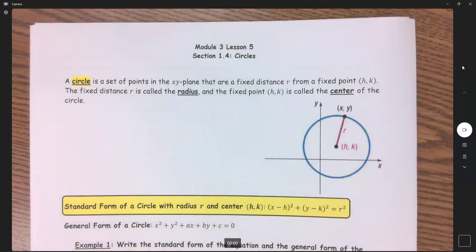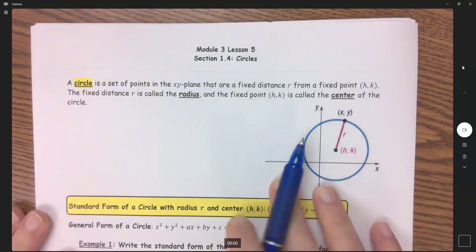So the definition of a circle is the set of all points in an xy plane that are a fixed distance r from a fixed point h,k. The fixed distance r is called your radius, and the fixed point h,k is called the center of the circle. So you can see here we have a picture of that.